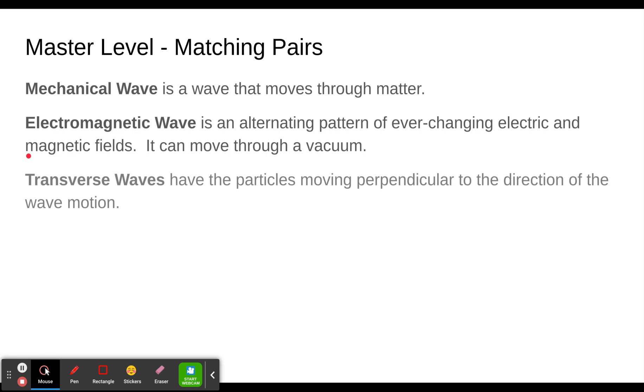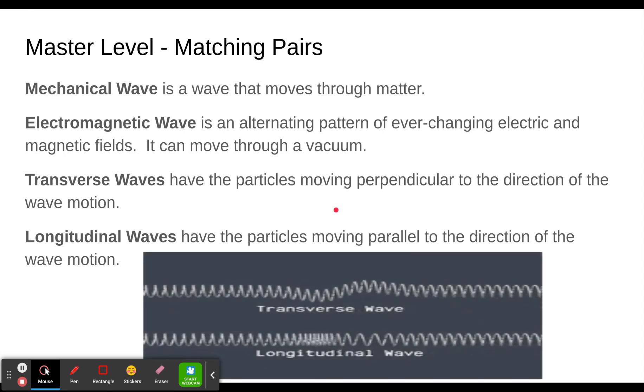The next term is transverse waves. Those are waves that have particles moving perpendicular to the direction of the wave motion. Longitudinal waves are waves that have particles moving parallel to the direction of wave motion. By the way, if you have any confusion on these particular definitions, I have a whole video about types of waves that could help you out even more.